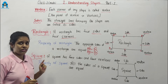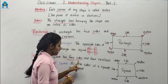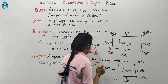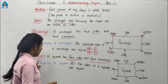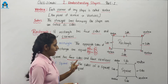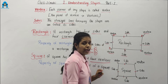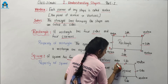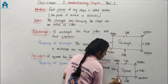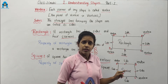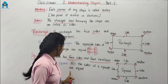Next shape is square. What is square? A square has four sides and four vertexes, just like rectangle. Rectangle also has four sides and four corners, and square also has four sides and four corners — one, two, three, four. Property of square: all the sides of a square are equal.